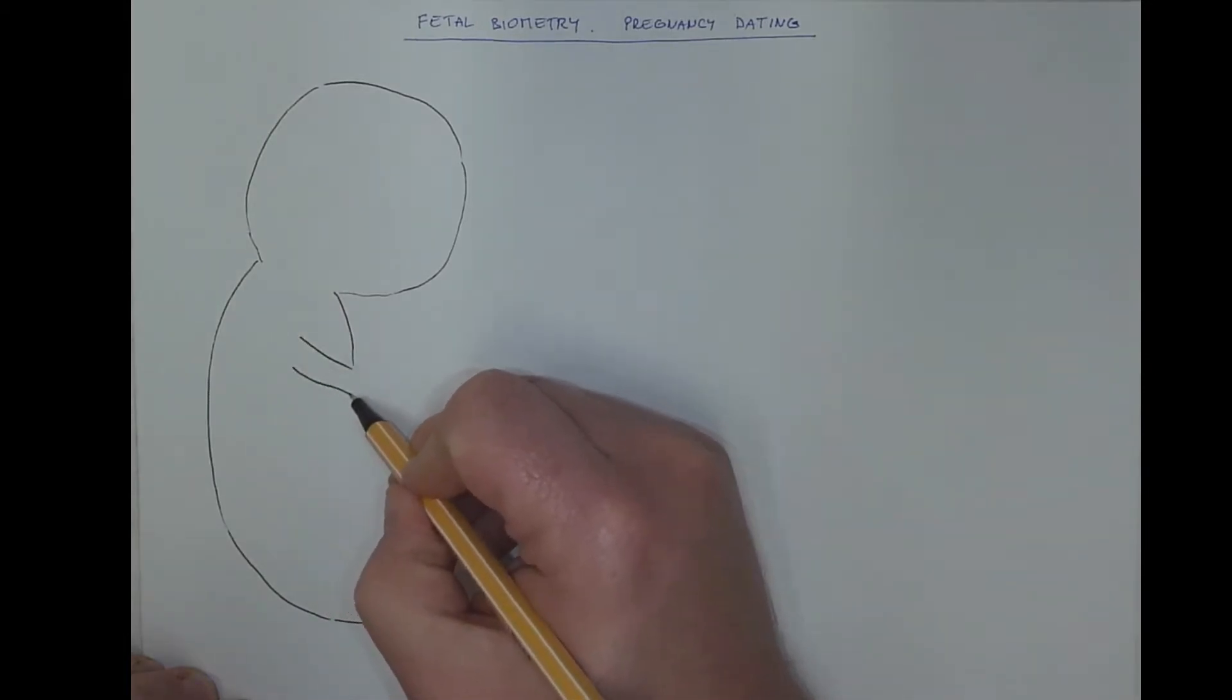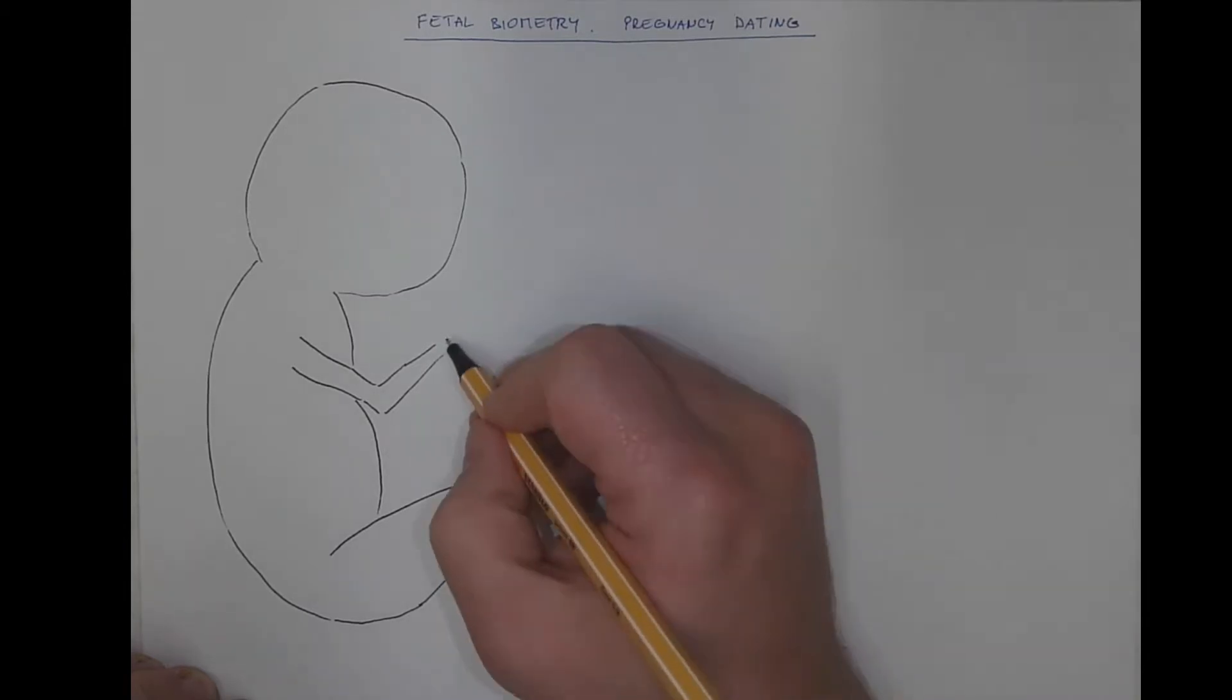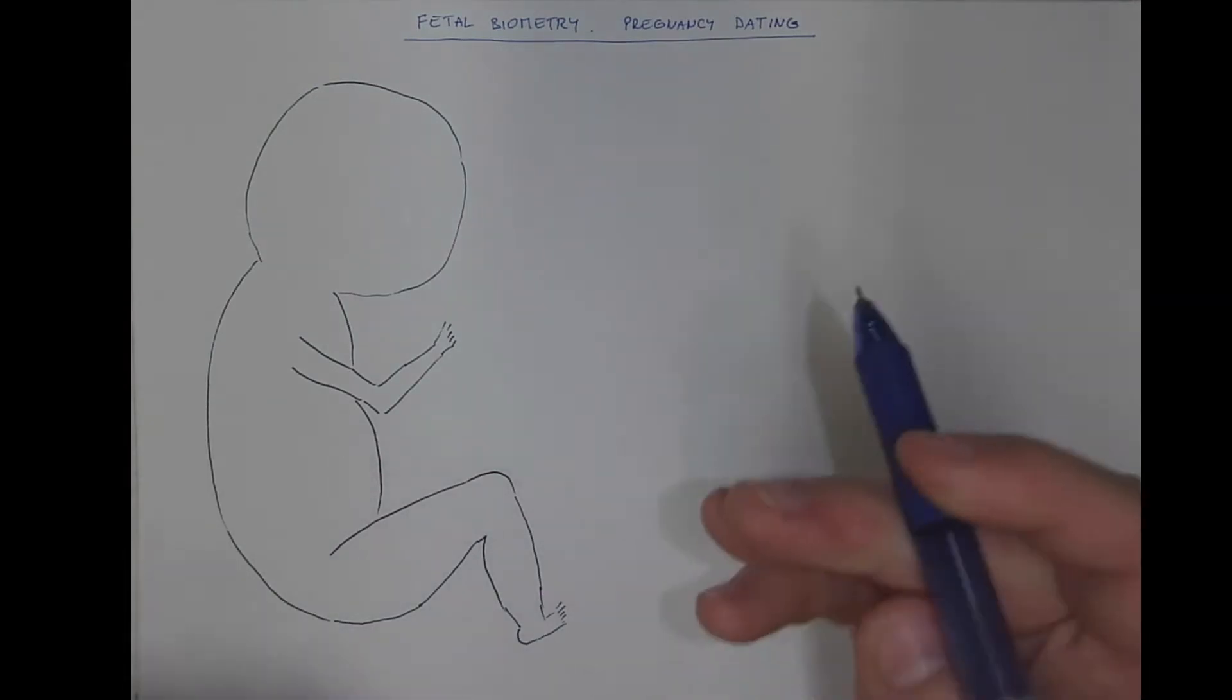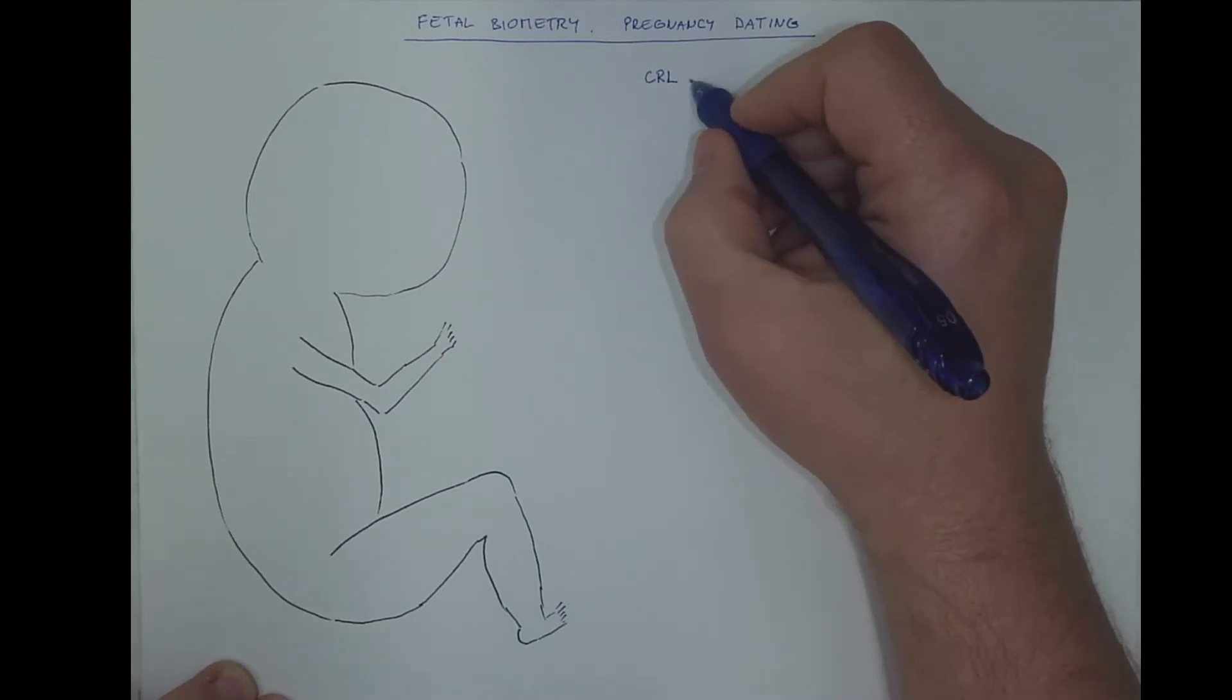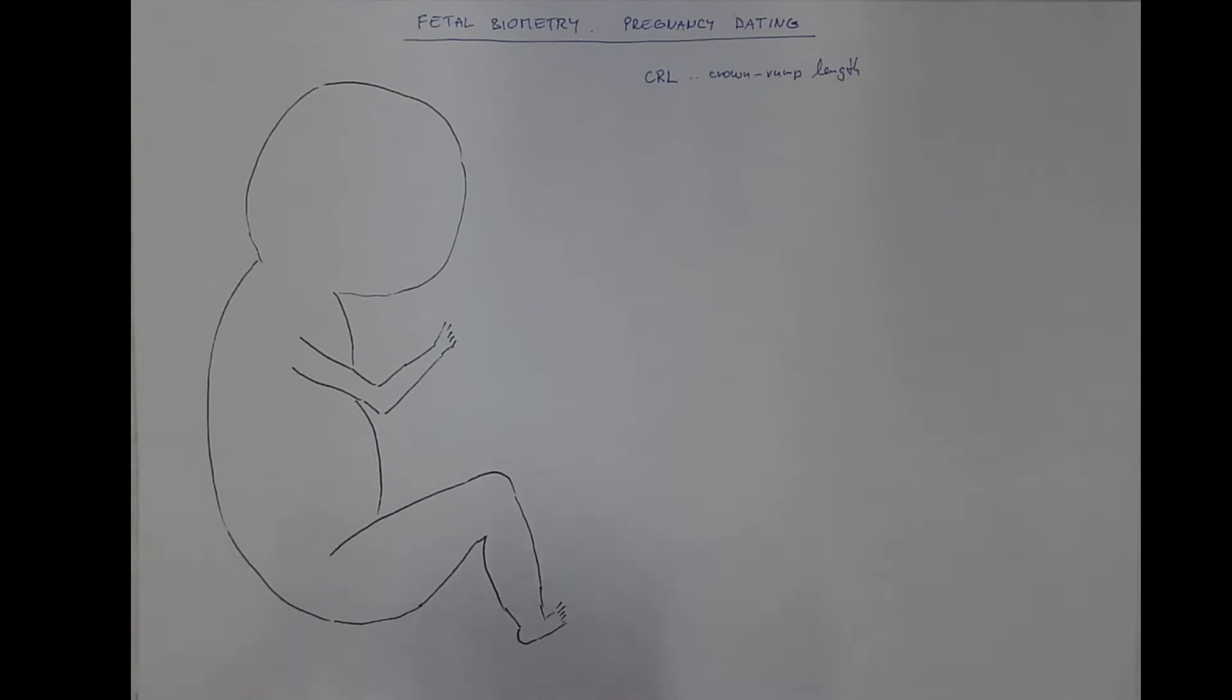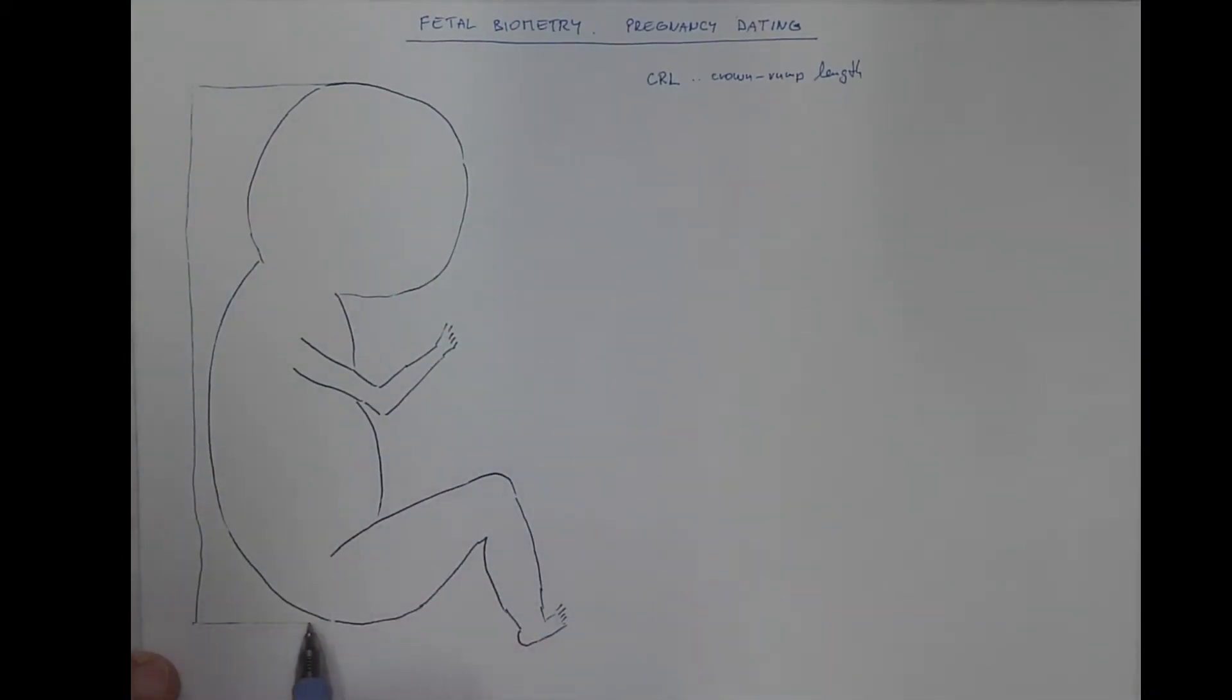Including the limbs. So one of the first parameters will be the crown rump length, abbreviated as CRL. Also known as the sitting height. And it will be that parameter.